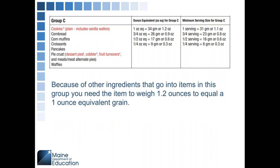The next group is Group C. This includes cornbread, corn muffins, croissants, pancakes, pie crusts, waffles, and cookies. Because there are other ingredients that go into these items, you need 1.2 ounces to equal a one ounce equivalent grain.